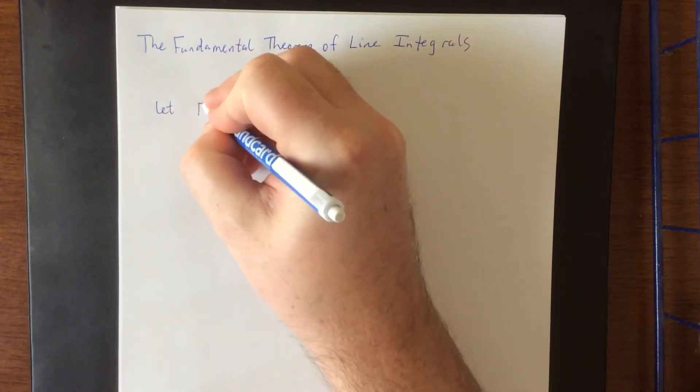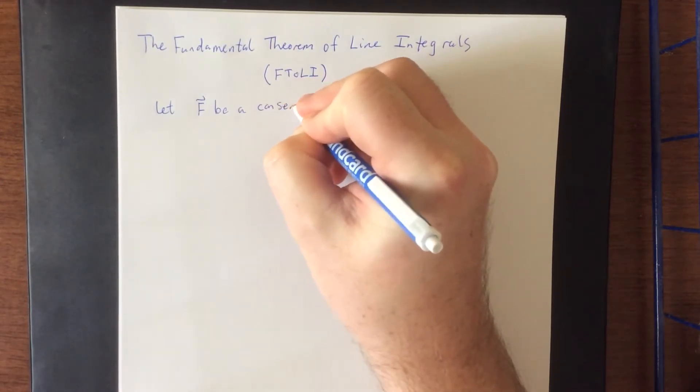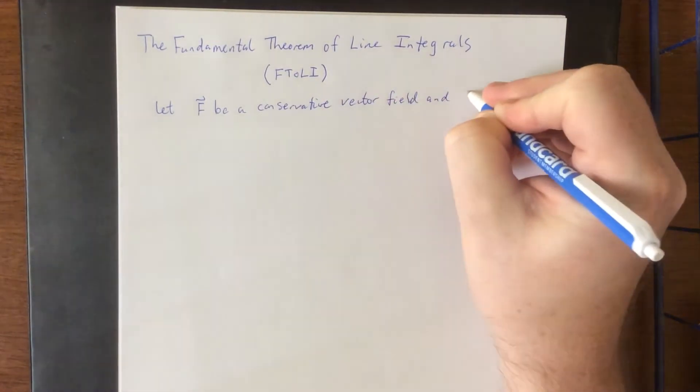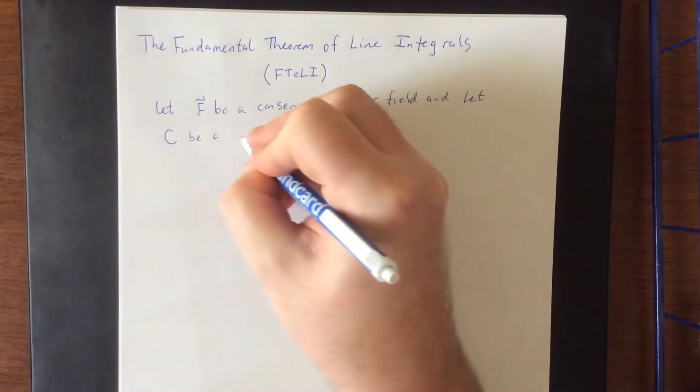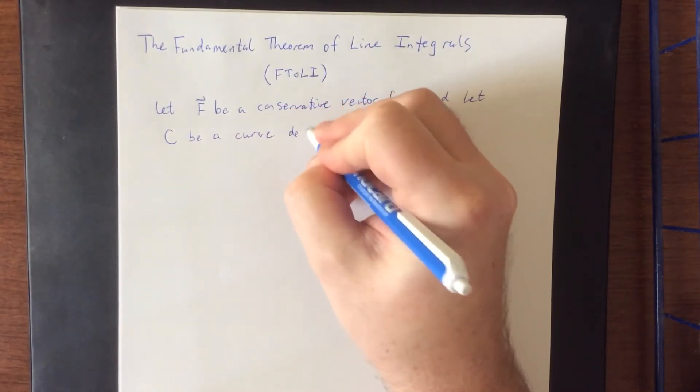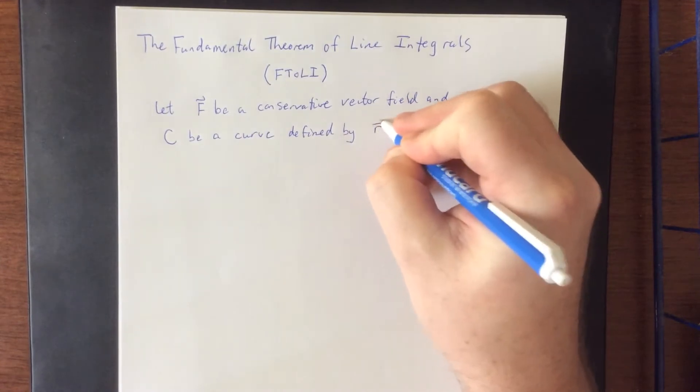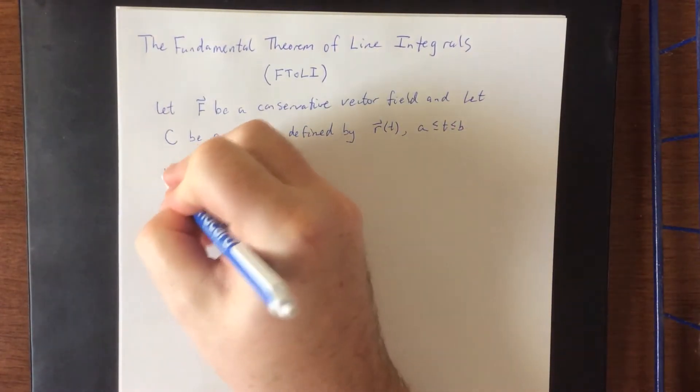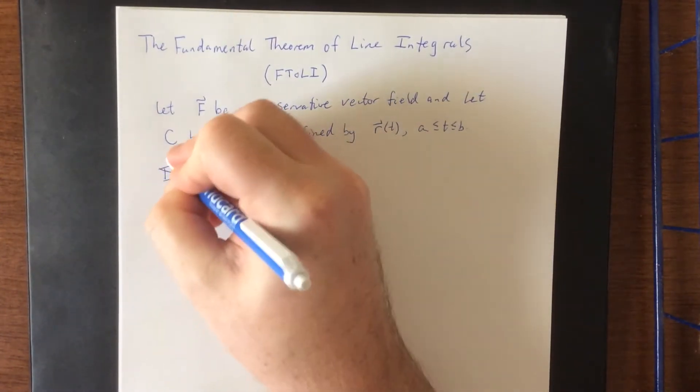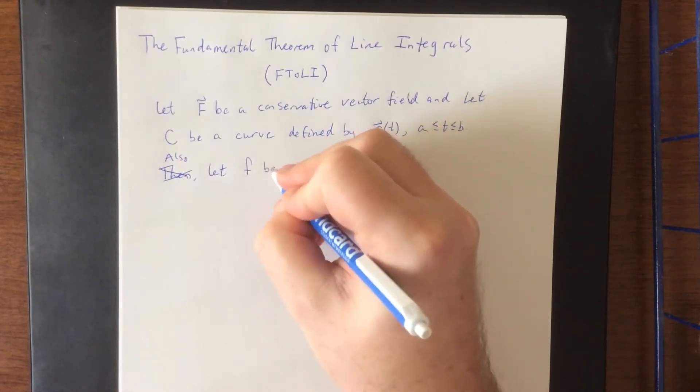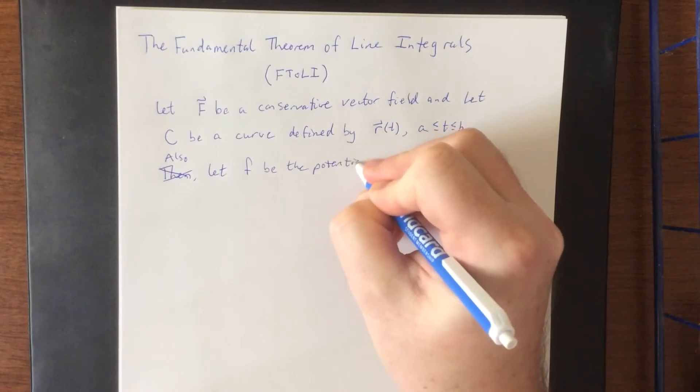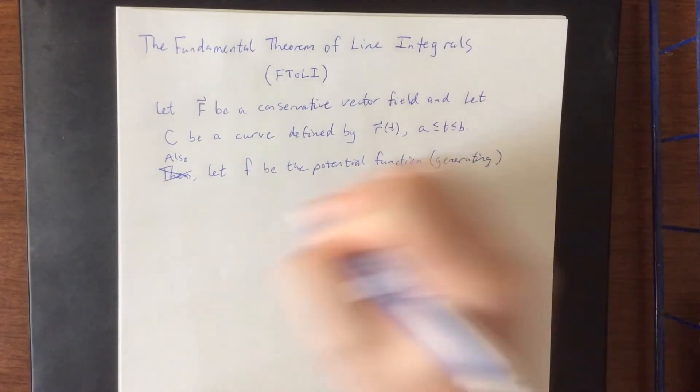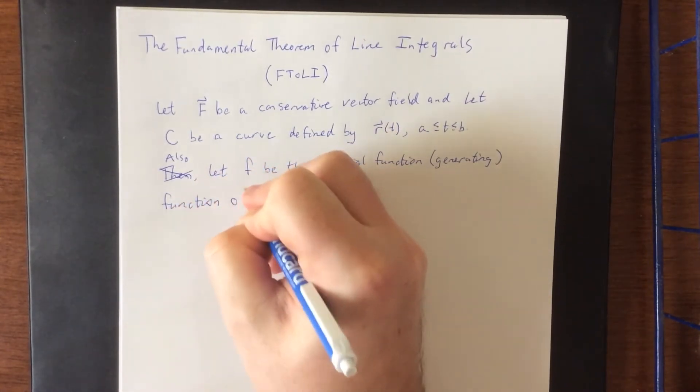So let capital F be a conservative vector field. And let C be a curve, and we'll define it by R of T going from A to B. Then, we'll say also, let little f be the potential function, or the generating function,